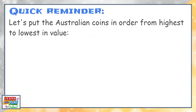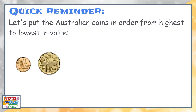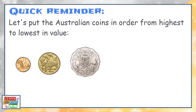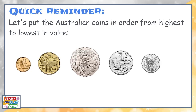Before we start, let's have a quick reminder. Let's put the Australian coins in order from highest to lowest in value: two dollars, one dollar, 50 cents, 20 cents, 10 cents, 5 cents.